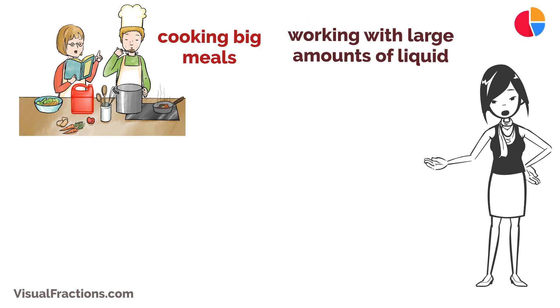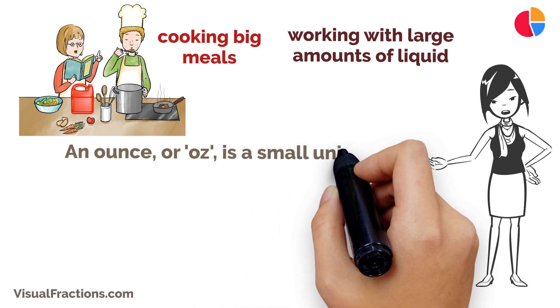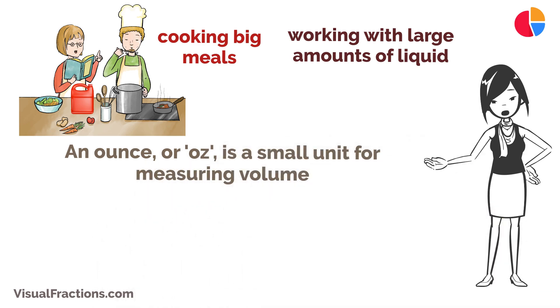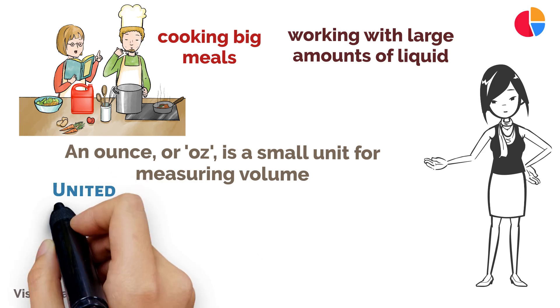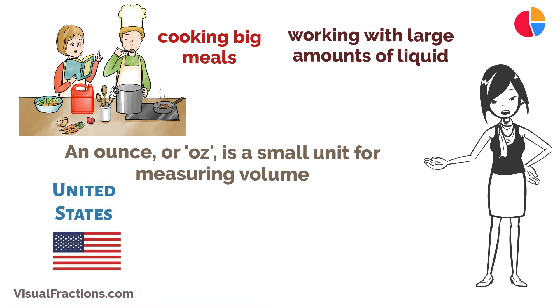So what are these units? An ounce, or oz, is a small unit for measuring volume. It's used a lot in the United States. A gallon is a much bigger unit of volume, also used in the US.